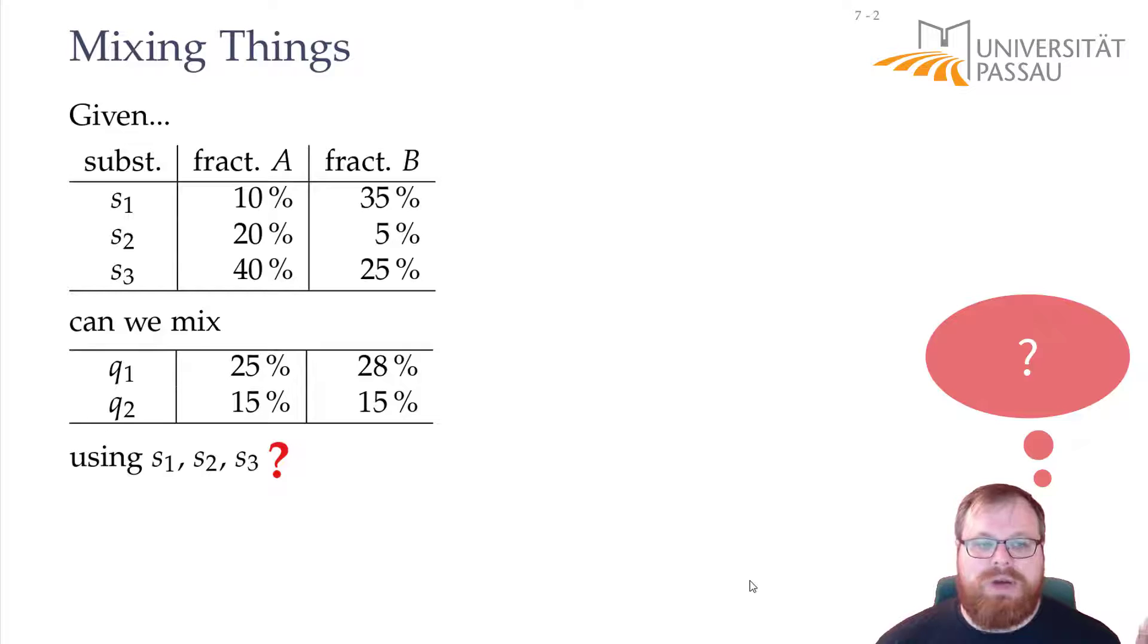Now you can try to figure out if you can solve this problem. If you have tried for a while, maybe you have found out that indeed you can mix component Q1, but maybe you haven't found a way to mix component Q2. And now we want to model this as a geometric problem that shows us why this is the case.